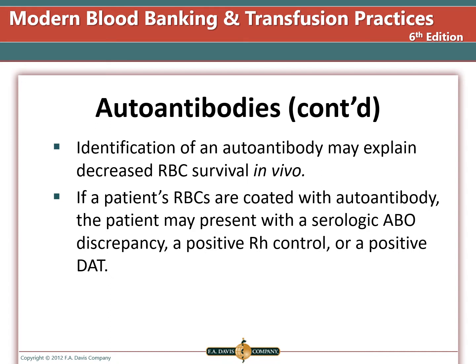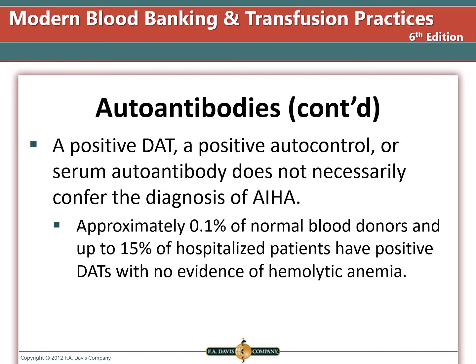If a patient's red blood cells are coated with an autoantibody, the patient may present with a serologic ABO discrepancy, a positive Rh control, or a positive DAT. A positive DAT, a positive autocontrol, or a serum autoantibody does not necessarily confer the diagnosis of autoimmune hemolytic anemia. Approximately 0.1% of normal blood donors and up to 15% of hospitalized patients have a positive DAT with no evidence of hemolytic anemia.